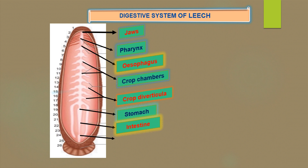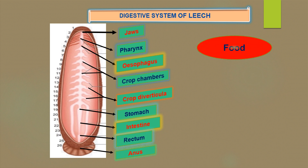Food, feeding and digestion. Leech food is blood. Leech sucks blood from cattle and domestic animals. During feeding, the leech attaches itself strongly by the posterior sucker. The leech makes a tri-radiate, Y-shaped incision in the skin of the host by the jaws that protrude through the mouth. The blood is sucked by the muscular pharynx and the salivary secretion is poured in.